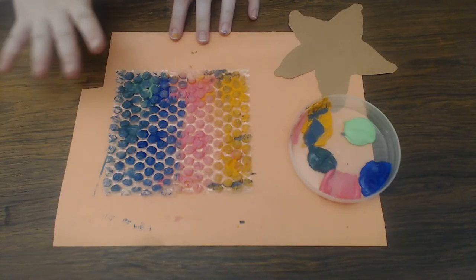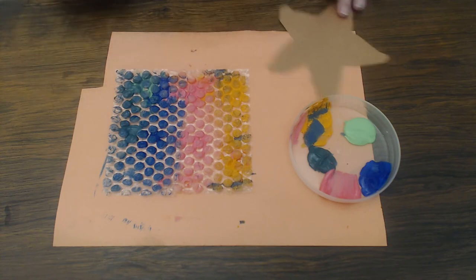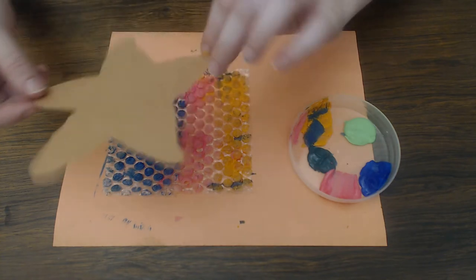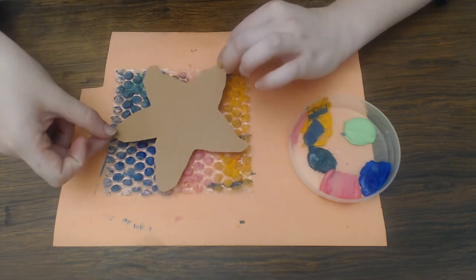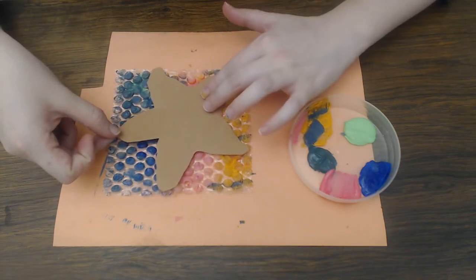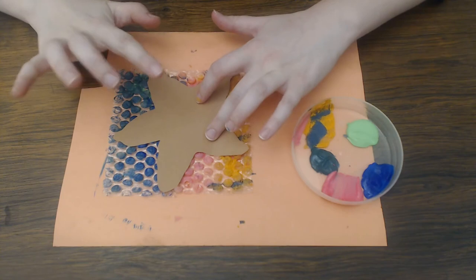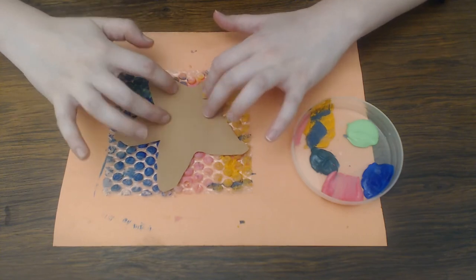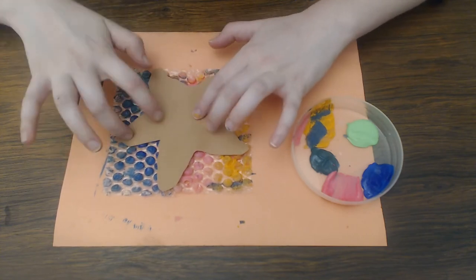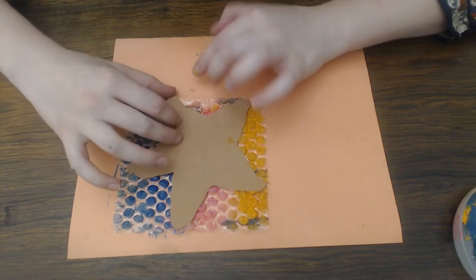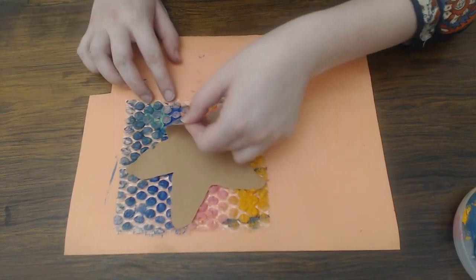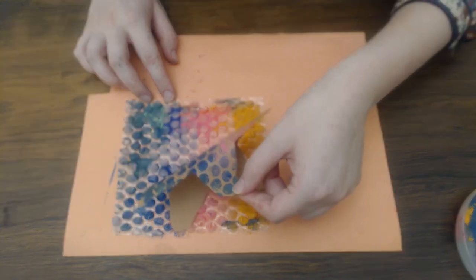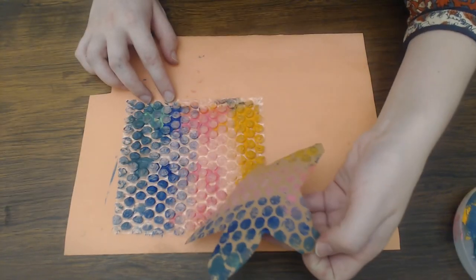I covered my whole square of bubble wrap with paint. Now I'm going to take my paper starfish, place it on top of the bubble wrap, and then I'm going to use my fingers to walk across my starfish and then slowly peel your starfish up off the bubble wrap.